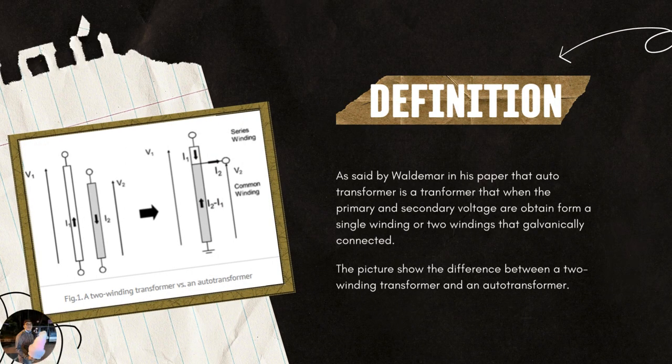First is the definition. As stated by Waldemar in his paper, an auto transformer is a transformer where the primary and secondary voltages are obtained from a single winding, or two windings that are galvanically connected. The picture shows the difference between a two-winding transformer and an auto transformer. The two-winding transformer has two windings beside each other, while the auto transformer has only one winding that can produce two voltages — primary and secondary.